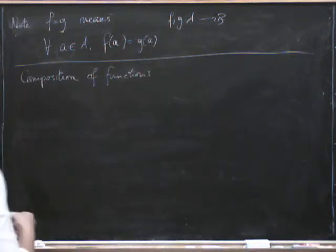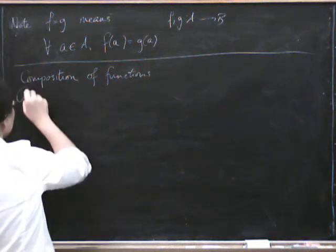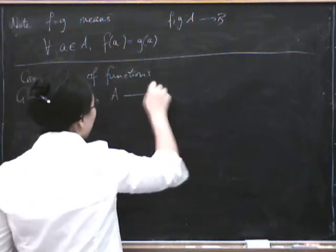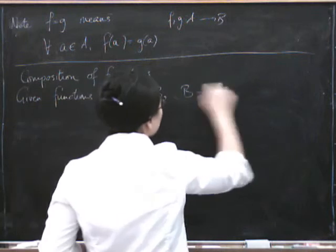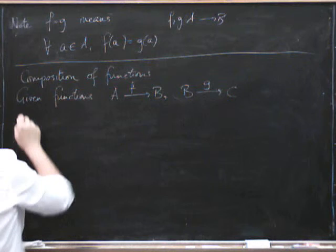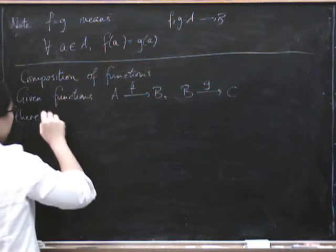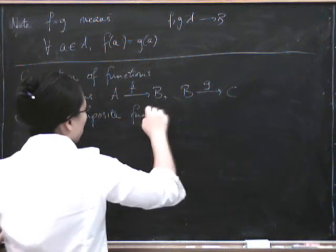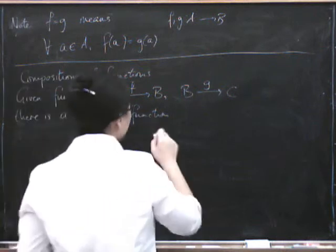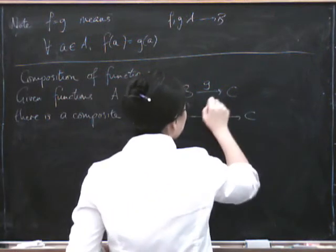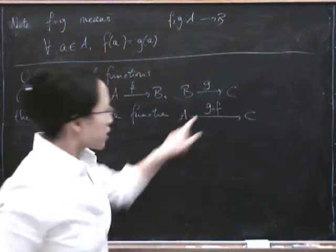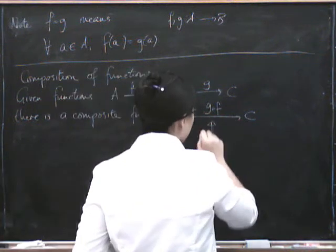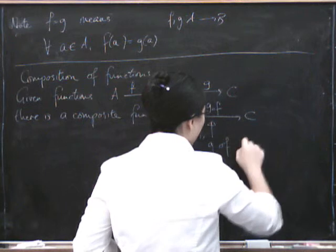And indeed, that is exactly what you can do. So given functions F from A to B and G from B to C, there is a composite function. So this goes from A all the way to C and it's called G of F. So this can be a bit confusing because it looks like we've written it backwards. But you're supposed to think of this as G of F and I'll show you why.